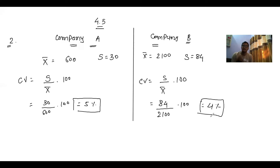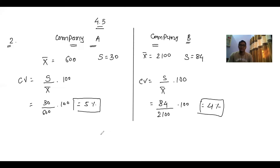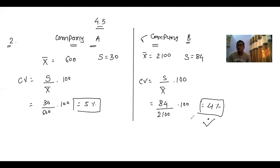CV has an inverse relation — lower the CV, higher the efficiency, and vice versa: higher the CV, lower the efficiency. For Company B the CV comes out to 4 percent, which is less compared to Company A's 5 percent. So we can say that Company B has more stable salary.